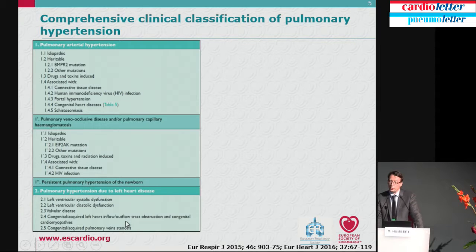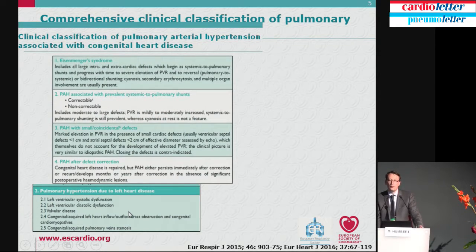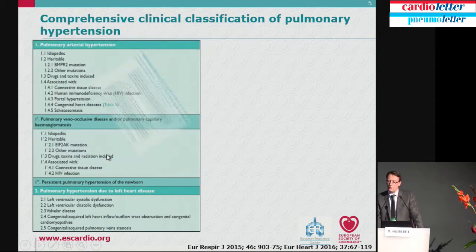Group 2 PH is very common in a cardiology setting, and even in a pneumology setting we must always bear in mind it is a very common cause of pulmonary hypertension. When dealing with Group 1 PH and congenital heart disease, patients should be subclassified into Eisenmenger syndrome, PH associated with prevalent systemic-to-pulmonary shunts — correctable or non-correctable — patients with a small coincidental defect, and PH occurring after correction. This is a subspecialist issue but quite important.